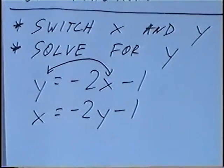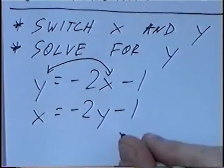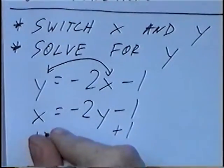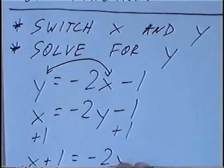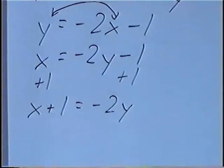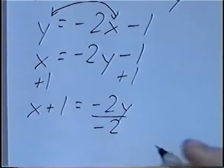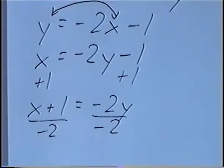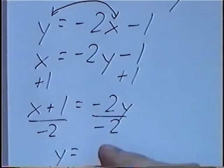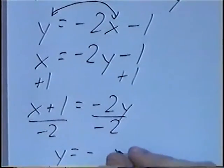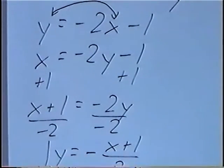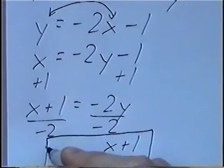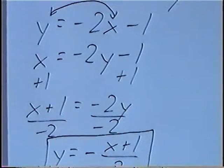To write the inverse in y-equals form, we solve for y. To solve for y, we add 1 on both sides, giving us x plus 1 equals negative 2y. Then we divide both sides by negative 2. Rewriting in y-equals form, we get y equals negative quantity x plus 1 over 2. So the inverse is y equals negative x plus 1, all over 2.